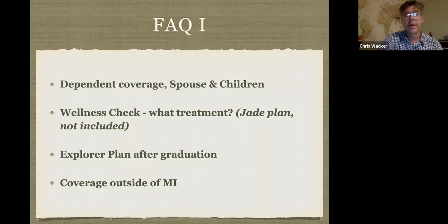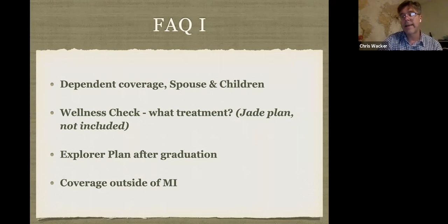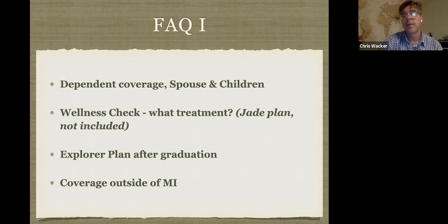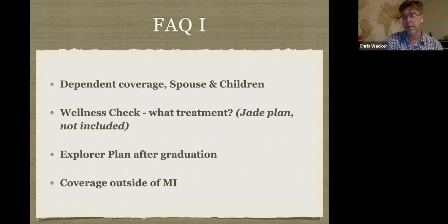Here are some frequently asked questions. First: is there dependent coverage for spouse and children? Yes. On the enrollment page, there's an option to add dependents. Spouse coverage rates are quite high — often about five times the student rate. Children coverage is about 1.5 times the student rate.